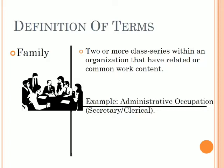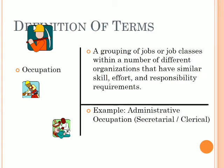Definition of family: two or more class series within an organization that have related or common work content. For example, administrative occupation — secretary. Definition for occupation: a grouping of jobs or job classes within a number of different organizations that have similar skill, effort and responsibility requirements. For example, administrative occupation — secretarial or clerical.